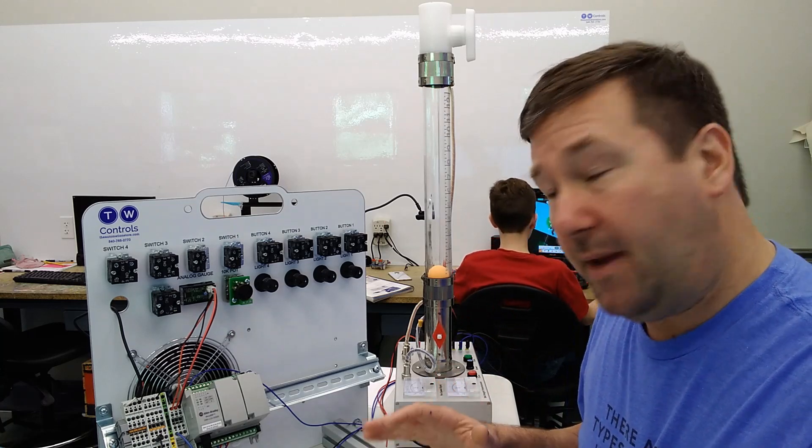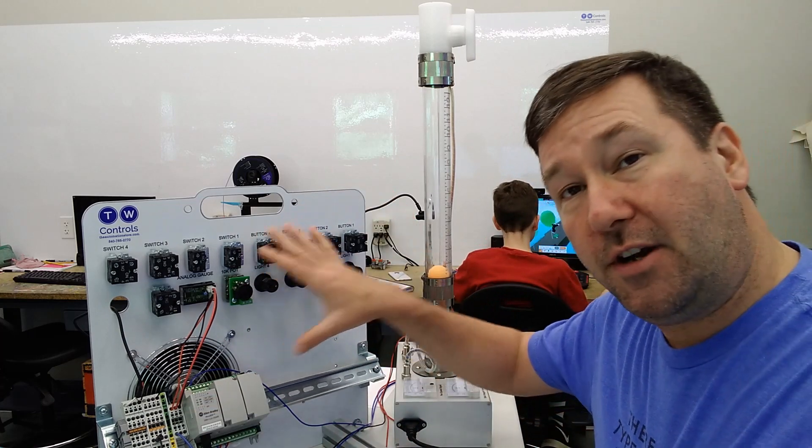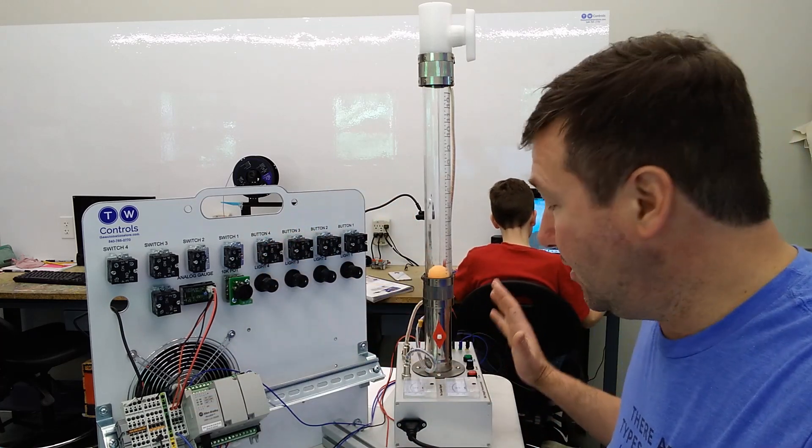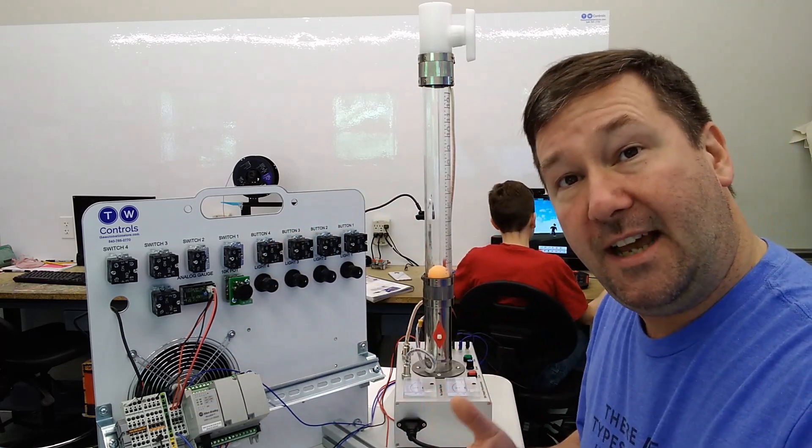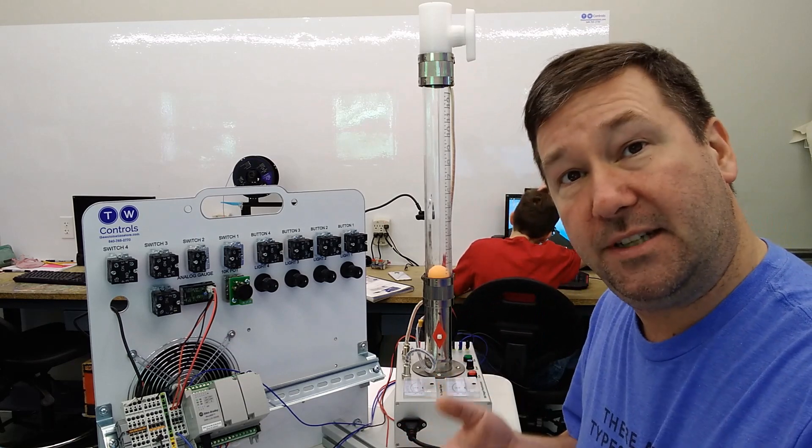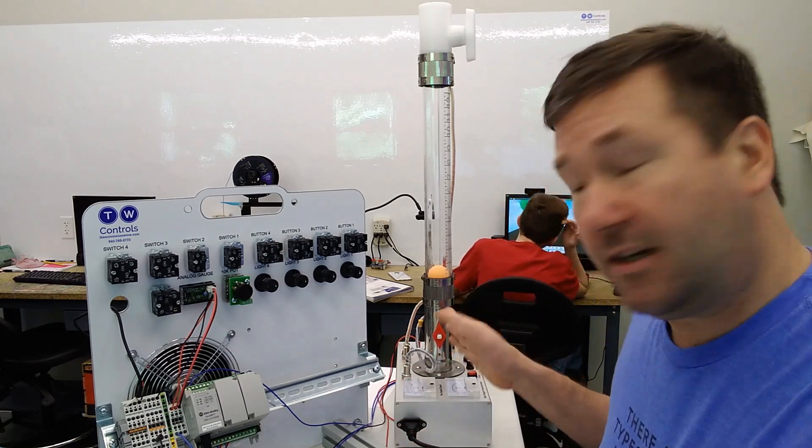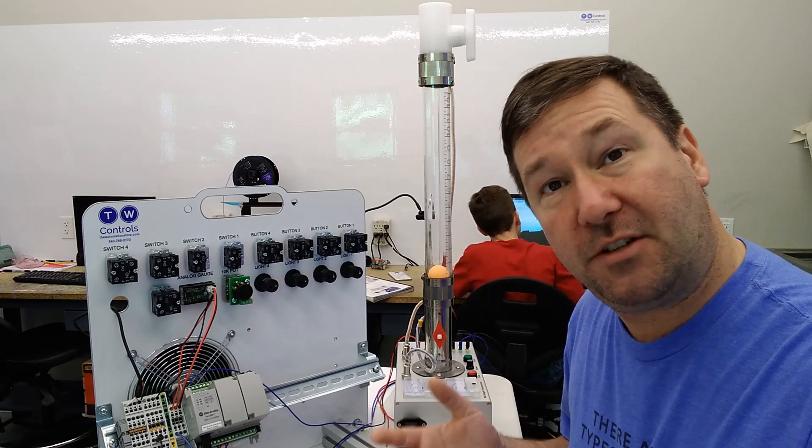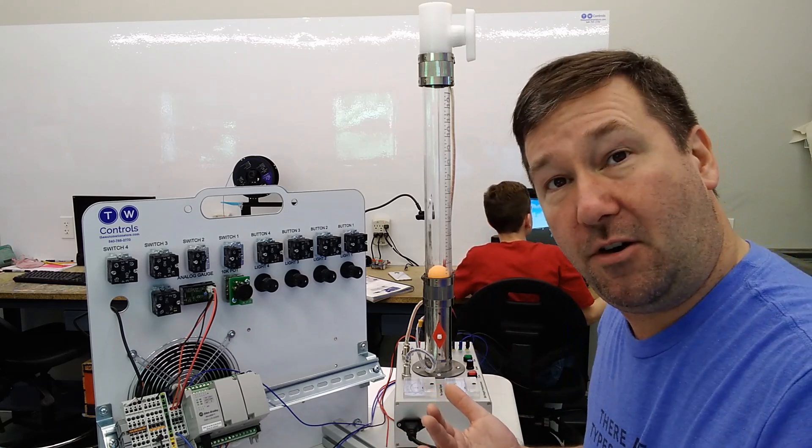In this one we are mainly going to concentrate on the wiring that we need to do to interface our trainer with Industrial Concepts trainer. And we're also going to test all our analog inputs, outputs, and the control to our damper valve to make sure everything's working right before we start our PID.